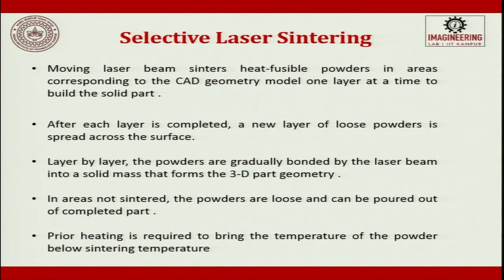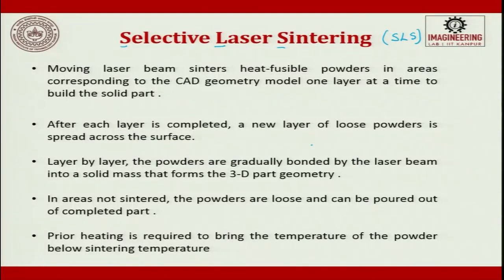The most popular technique used extensively today is selective laser sintering, otherwise called SLS. A moving laser beam sinters heat-fused powders in areas corresponding to the CAD geometry model, one layer at a time, to build the solid part. After each layer is completed, a new layer of loose powder is spread across the surface. The laser goes on top and melts the powders superficially — not exactly melting, but joining all these metal powders — and then the complete layer of information is done.